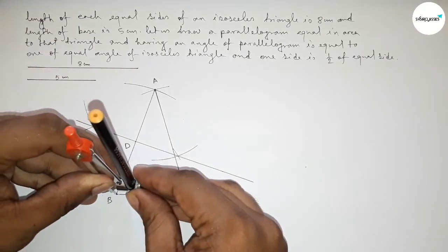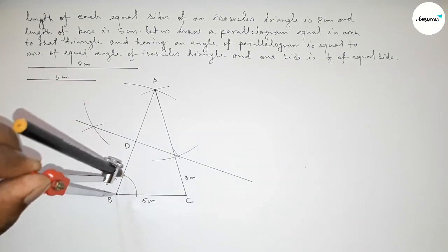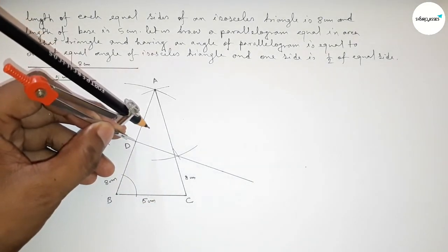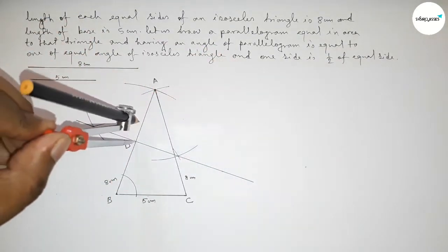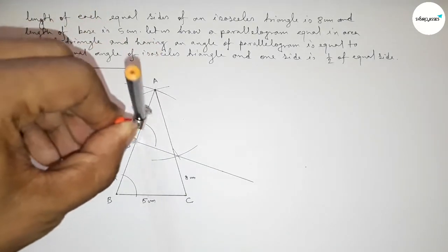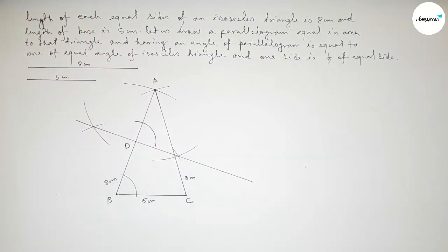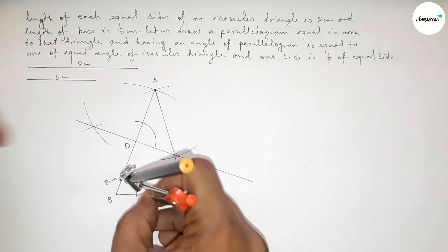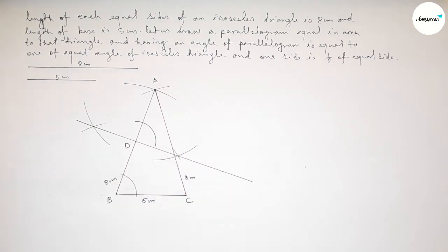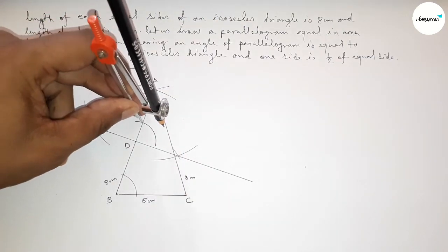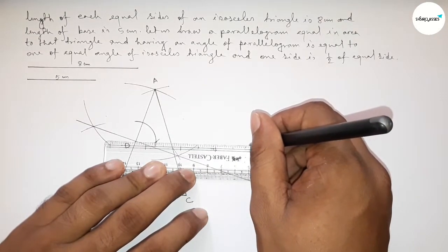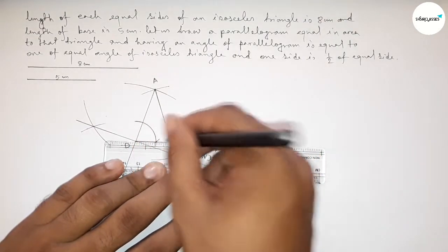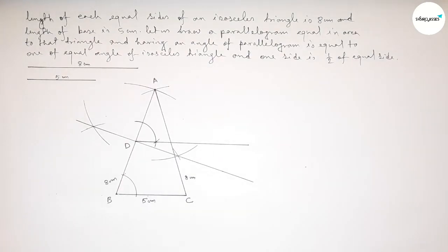Now we draw an angle at D equal to the base angle of the isosceles triangle. We draw an arc at the base angle of the triangle, then place the compass at D with the same radius and draw the same arc. Taking the distance between the arc points at the original angle and transferring it to the arc at D, we mark the intersection and join the line to establish the required angle.